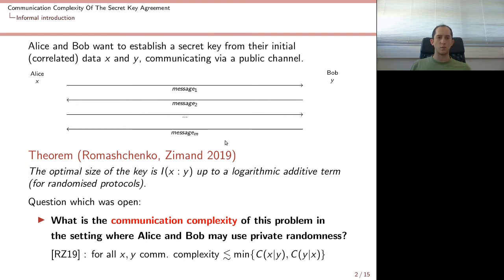One can ask what is the optimal size of the Secret Key — how large can the Secret Key be when Alice and Bob are establishing a key in this protocol. The answer is given in the theorem by Romachenko and Zimand in their 2019 paper: the optimal size of the Secret Key is the mutual information of X and Y in Kolmogorov complexity, up to some logarithmic additive term logarithmic in the length of X and length of Y.